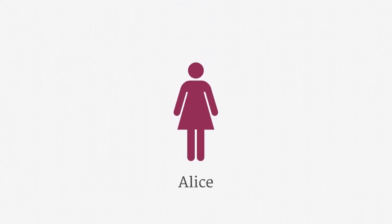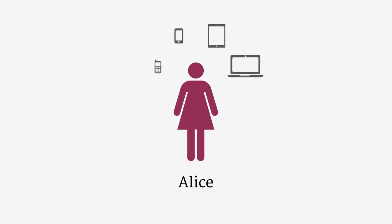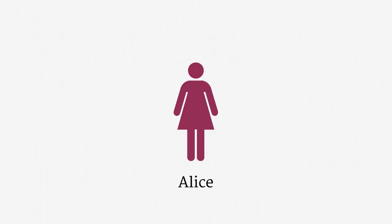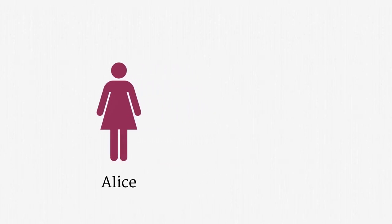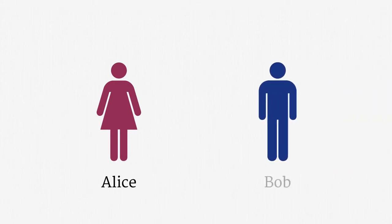Our lead character is named Alice. Throughout the remainder of the course, Alice is going to use a variety of communications and computing technologies. We'll work through how the law both enables and restricts surveillance against each of those technologies. Since much of government surveillance focuses on communications, we need to give Alice someone to talk to. In the standard security cast of characters, that's Bob.